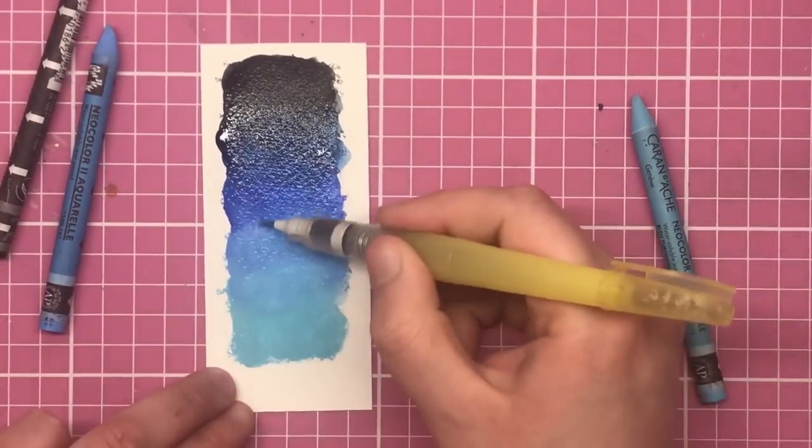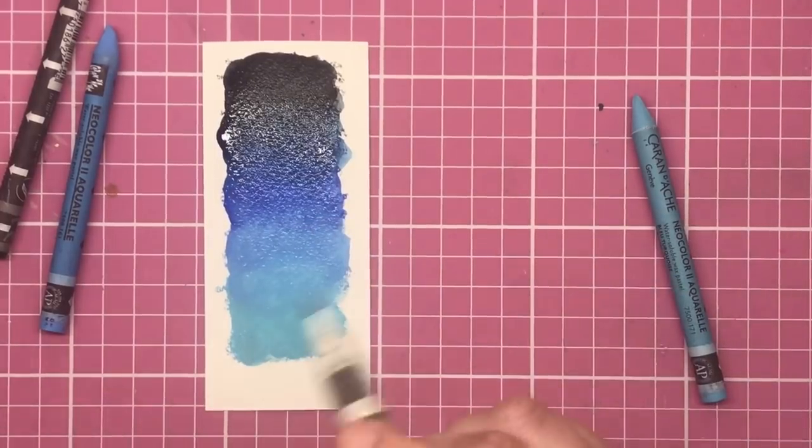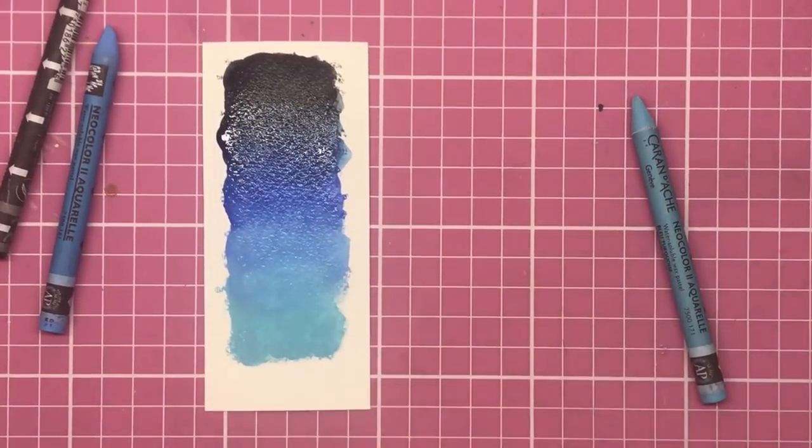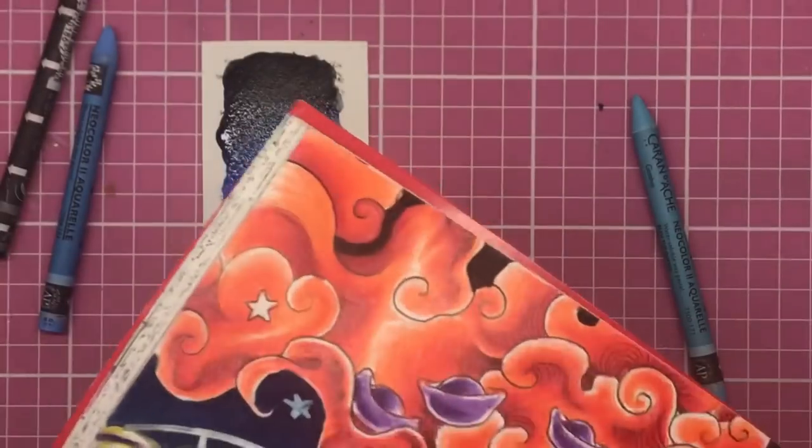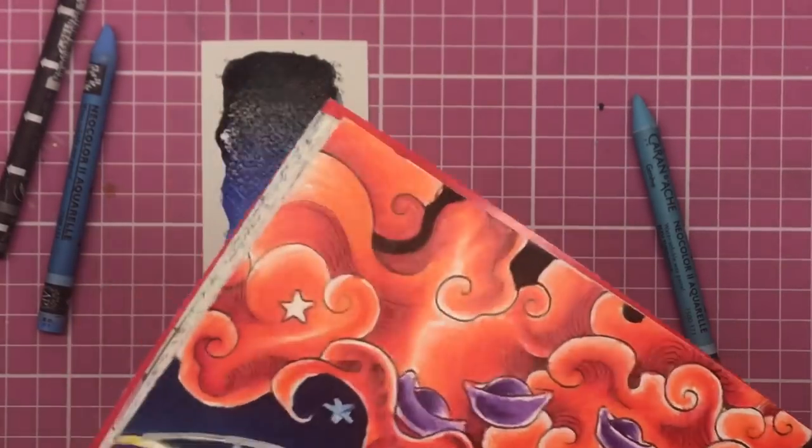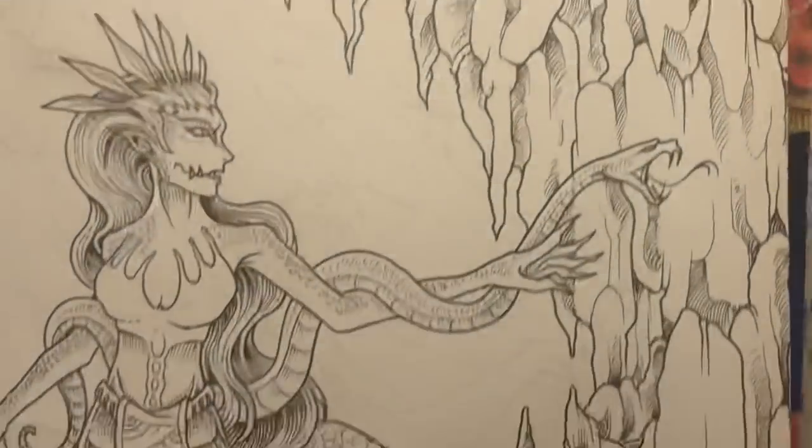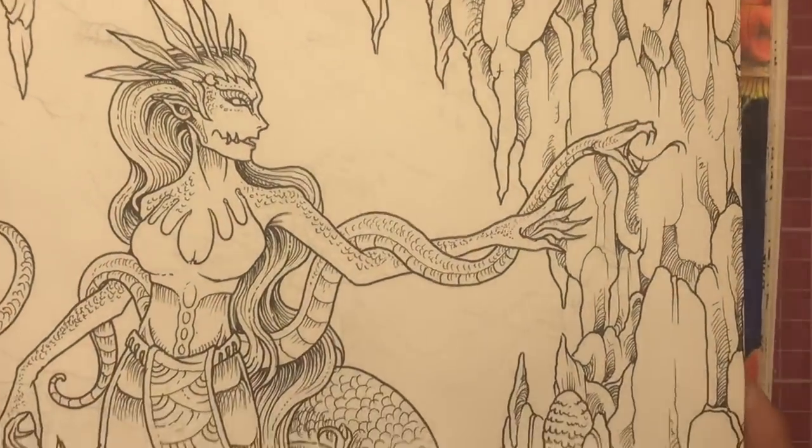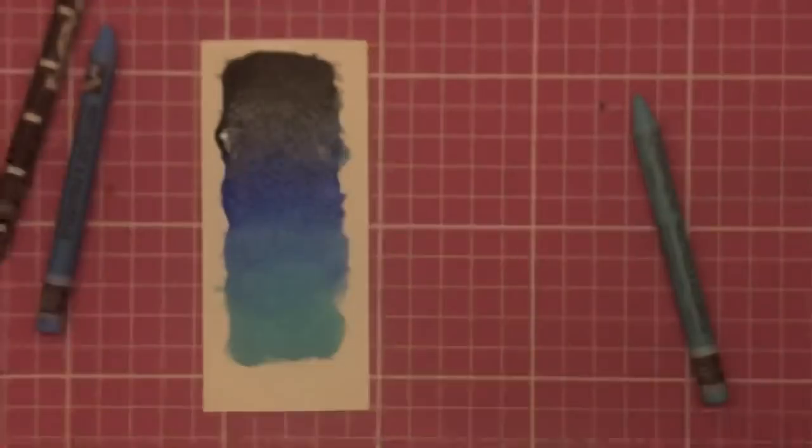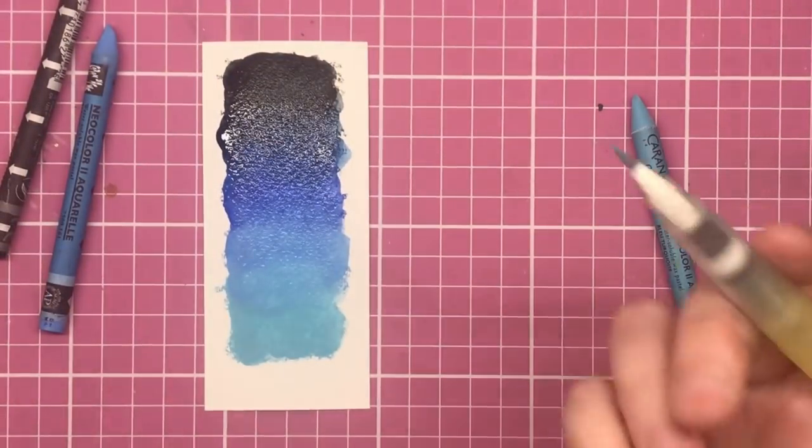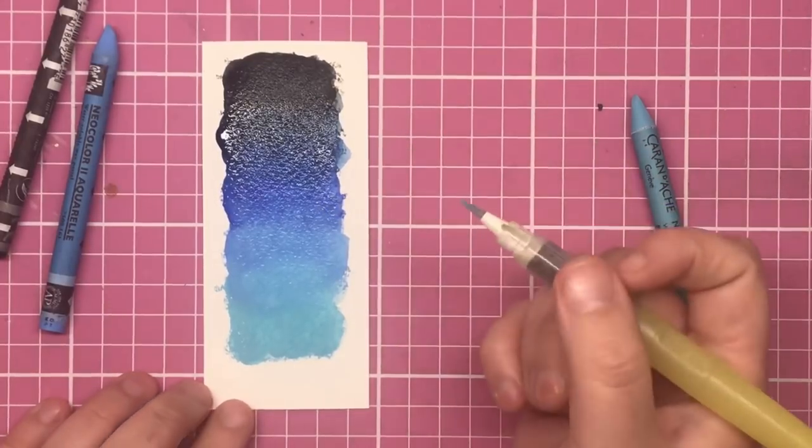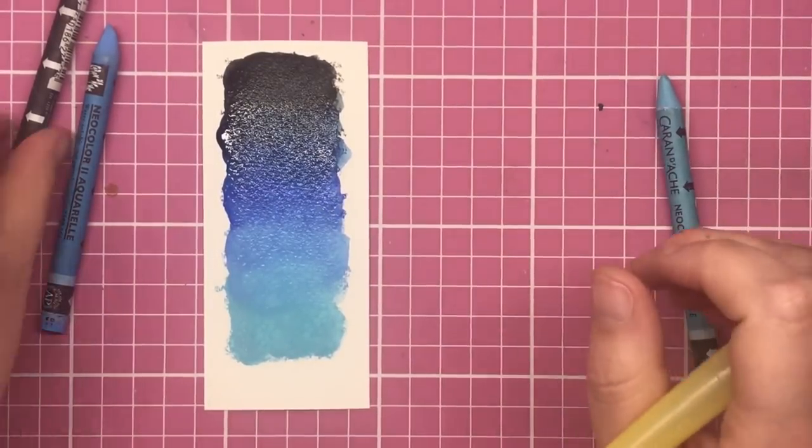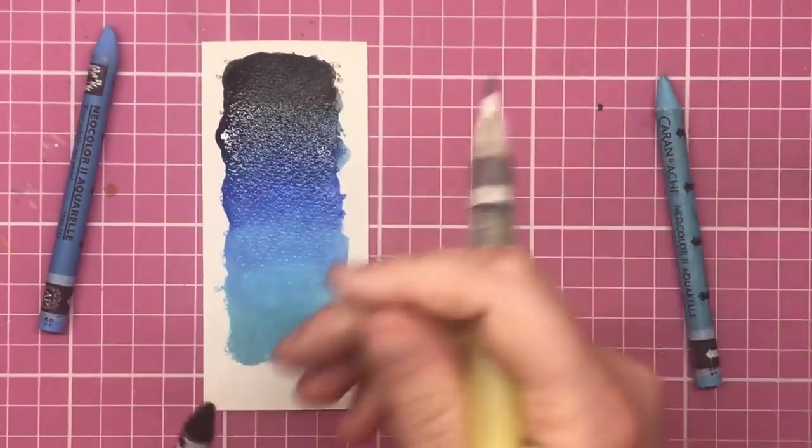And then I would recommend doing a third layer. Now on the Mythomorphia one that I did, there was absolutely no transference on the other side. So just to show you, there's the one that I did and I'm going to turn it over and you can see that there is no show through or shadowing of the Neo colours whatsoever. So these are really good to use on most coloring books. Obviously the thicker the better, but they're really, really good. So third layer because there's still a bit of patchiness here.